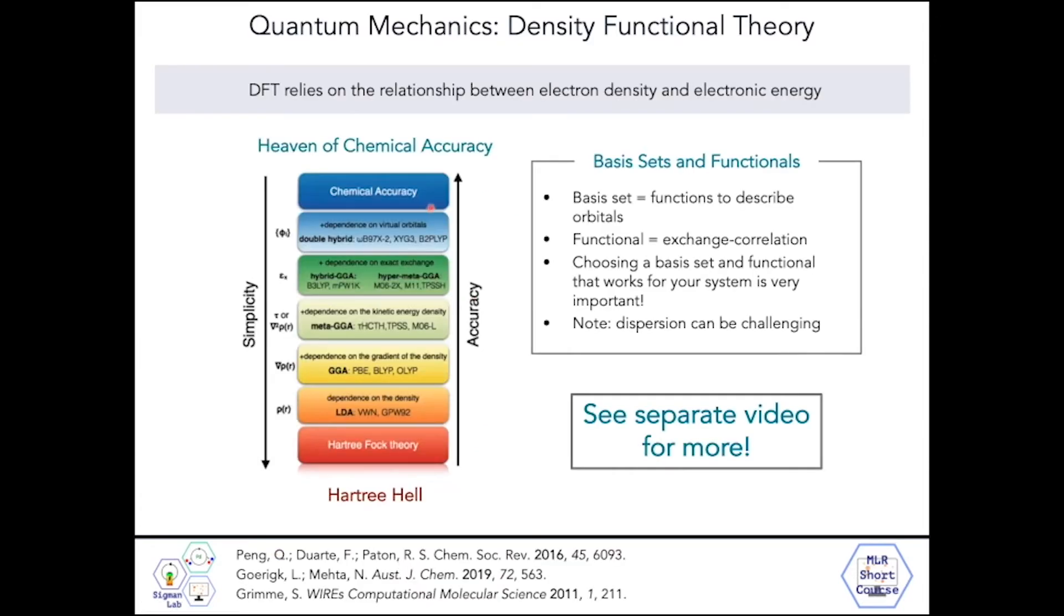At its very core, DFT relies on the relationship between electron density and electronic energy. To perform a DFT computation, you need to select a basis set and a functional. A basis set is basically a set of functions that describe the orbitals or the electrons of the system. The functional allows you to understand the electronic exchange and correlation that really accounts for how electrons might interact with each other.